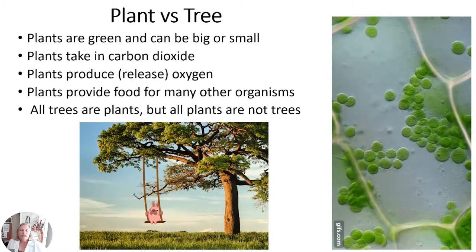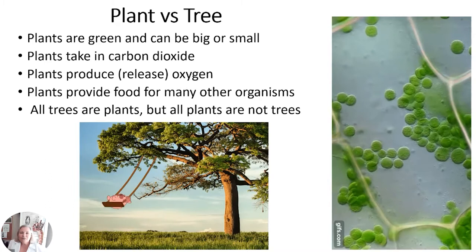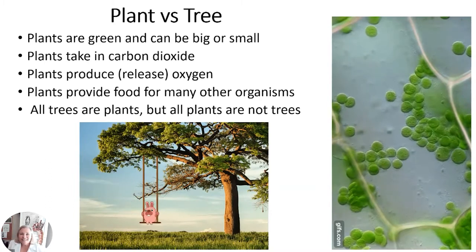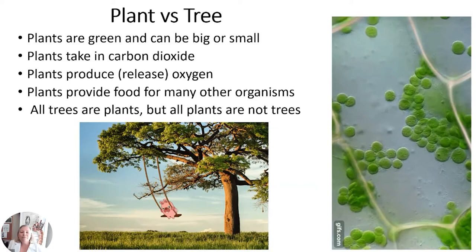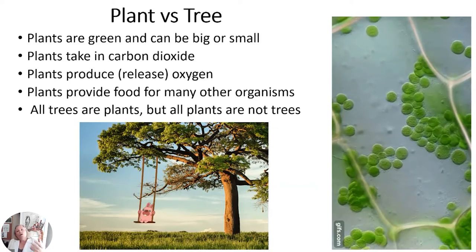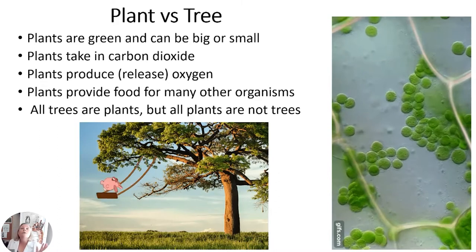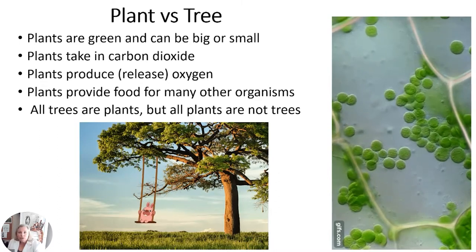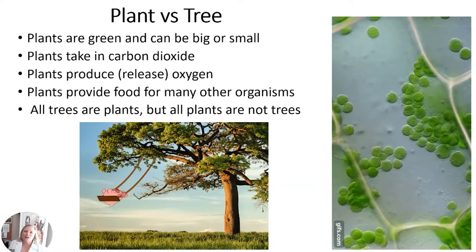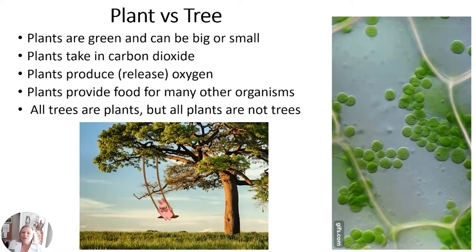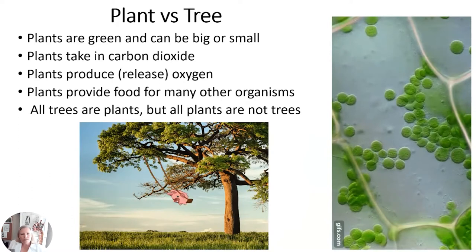Plants are green but they can be big or small. Those little dots moving in the picture are tiny algae that live in the water and float around — that's what a lot of ducks like to eat. Plants take in carbon dioxide and release oxygen, which is perfect because we breathe in oxygen and breathe out carbon dioxide. That's why it works so well to have plants and animals together — plants help clean our air and provide lots of food for organisms like us.